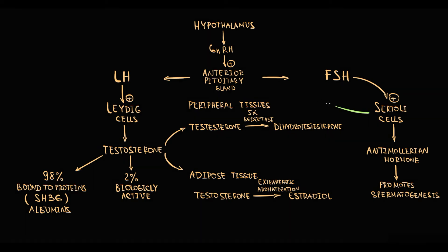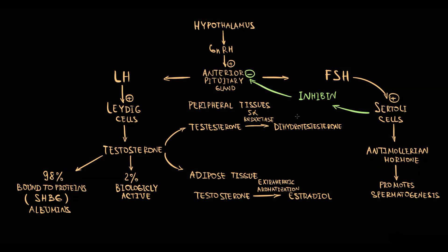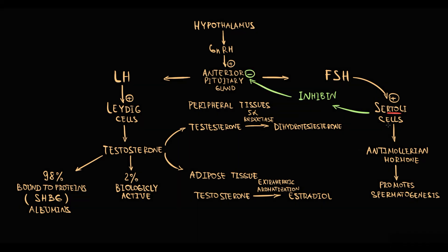Sertoli cells also secrete a substance called inhibin, which is a glycoprotein that inhibits secretion from the pituitary gland. So Sertoli cells that produce sperm have their own feedback mechanism through the secretion of inhibin, which serves as an indicator of spermatogenesis.